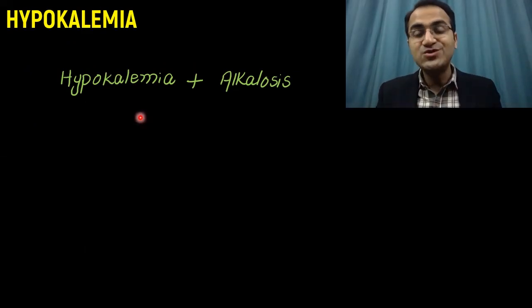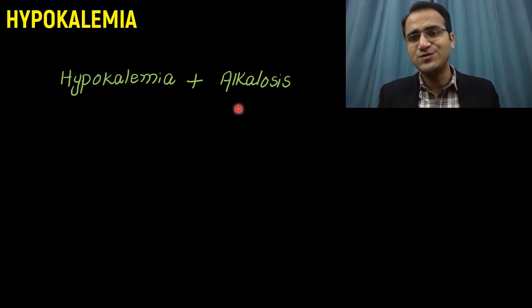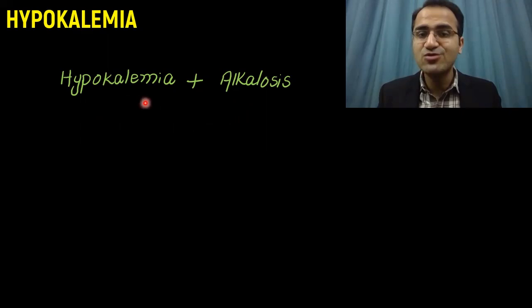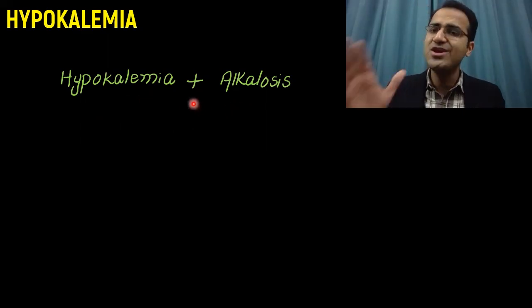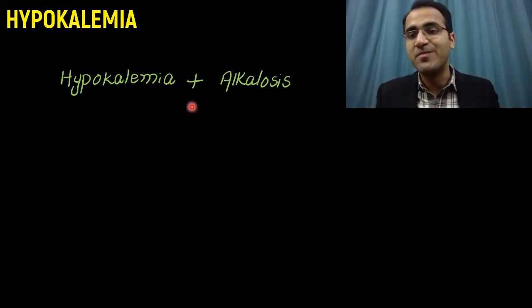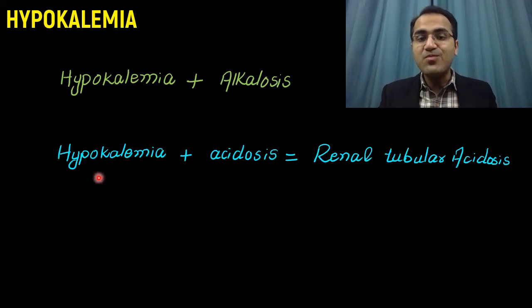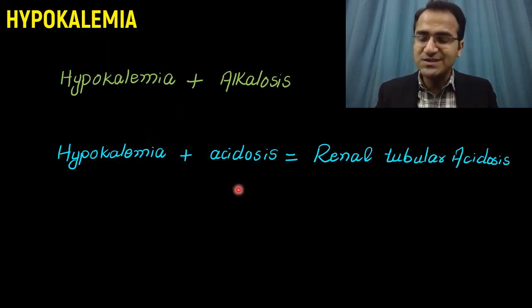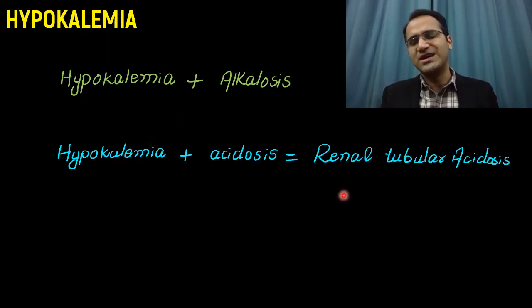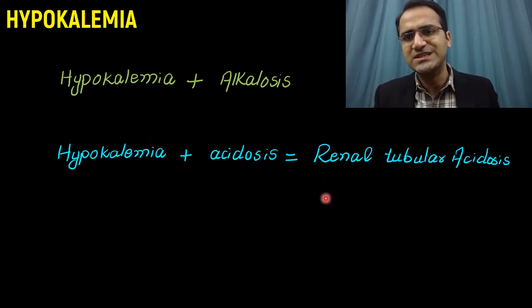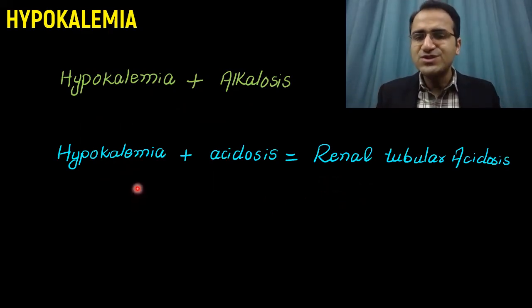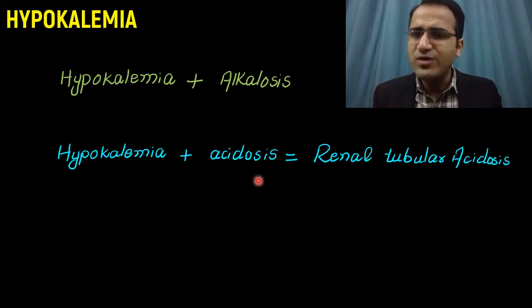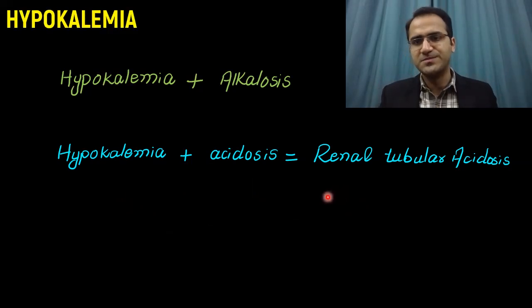Hypokalemia is often associated with alkalosis because hydrogen and potassium are lost together in urine. But if you see hypokalemia with acidosis, suspect renal tubular acidosis. There are many causes of hypokalemia with acidosis, but renal tubular acidosis is an important one to remember.